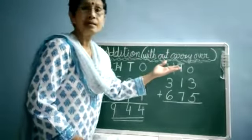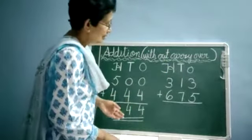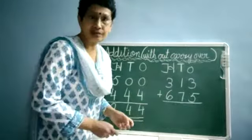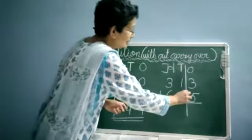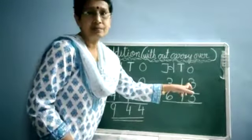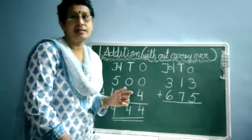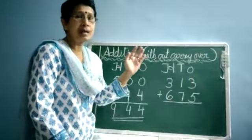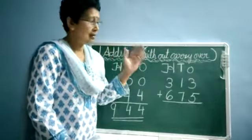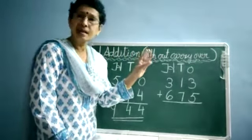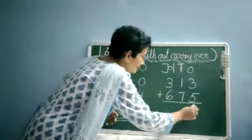Next sum is 313 plus 675. Always start again from the ones side. 5 and 3. 5 is in your mind, 3 is on your finger. So 5, the next number, I have three more numbers to take. So 6, 7, 8. So 5 plus 3 is 8.